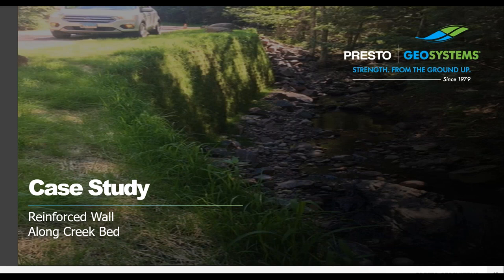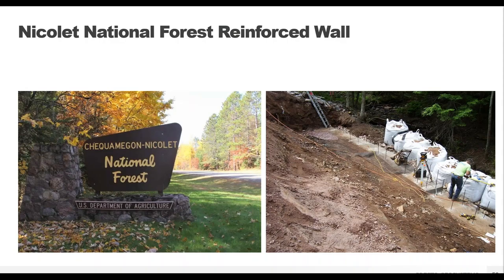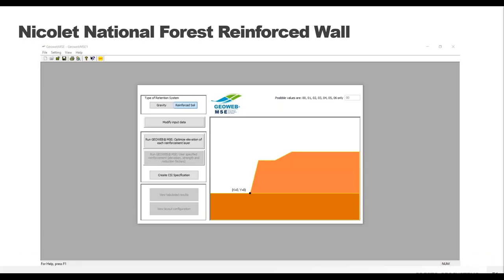Let's look at one more case study — a reinforced wall along a creek. This is a project we did in northern Wisconsin. The slope below a roadway was eroded into a creek bed, undermining the road. A retaining wall was required to support the road traffic, close the edge of the wall, and retain the soil to prevent movement and erosion. We'll start a new model by hitting new in the upper left-hand corner, and this time we make sure we have the reinforced wall button checked.